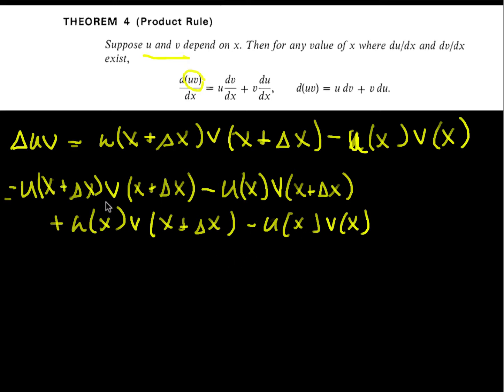But this expression has this common term here, v of x plus delta x, that can be factored out. And the next group has the u of x that are common and can be factored out. And so I go ahead and factor those out.